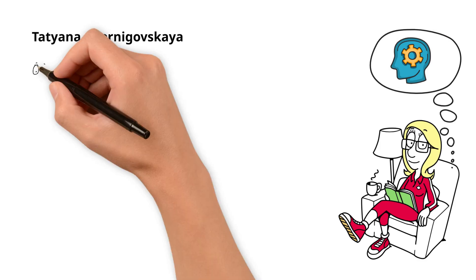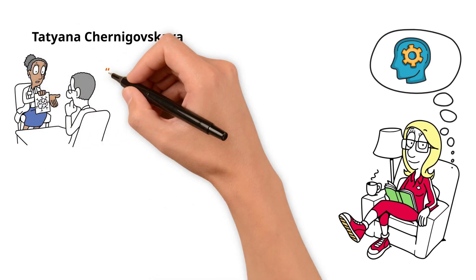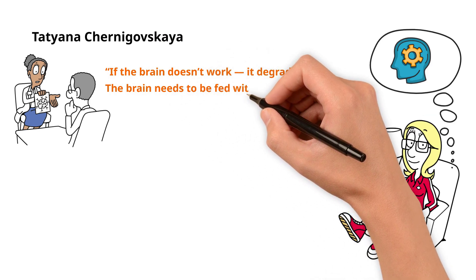Tatyana Chernigovskaya, a neuroscientist and expert in cognitive science, puts it this way. If the brain doesn't work, it degrades. The brain needs to be fed with meaning.